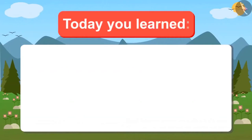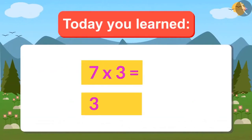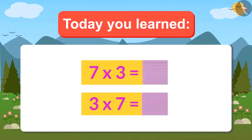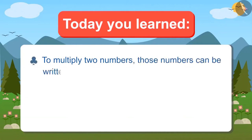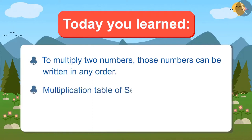Today you learned that whether you multiply 7 by 3 or 3 by 7, the answer will be 21. That means when two numbers have to be multiplied, they can be written in any order — the answer will be the same. We also learned the multiplication table of 7. Now write 7's multiplication table and memorize it by singing.